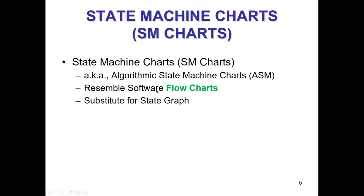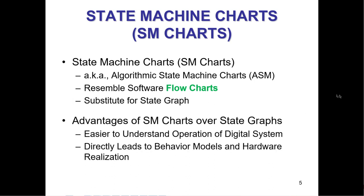SM charts stand for state machine charts — they can also be called algorithmic state machine charts. They look a lot like flowcharts and can substitute for state graphs. If you have a state graph, you should be able to directly write your SM chart. The only difference is the state graph normally doesn't have the flip-flop encoding labeled onto it, but the SM chart should — that's what makes it so powerful. The main advantage of SM charts over state graphs is that you can skip the state table, transition table, K-maps, and equations — you can write the equations directly.